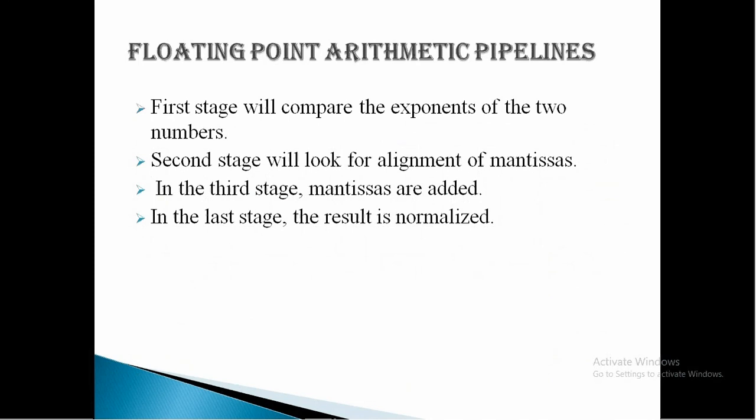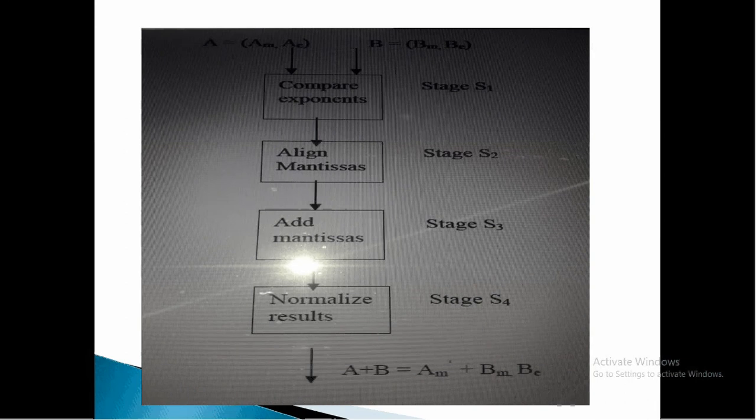Floating-point arithmetic pipeline. Floating-point computations are the best candidates for pipelining. Taking the example of addition of two floating-point numbers, the following stages are identified: First stage will compare the exponents of the two numbers. Second stage will look for alignment of mantissas. In the third stage, mantissas are added. In the last stage, the result is normalized.